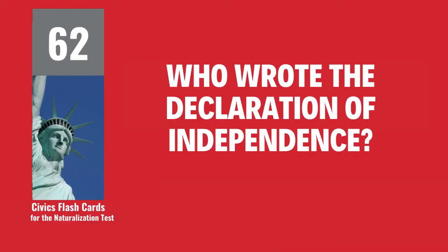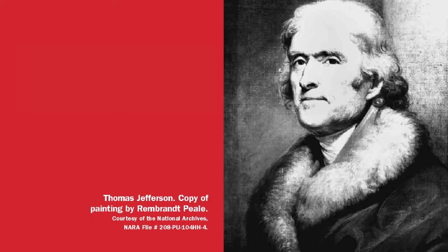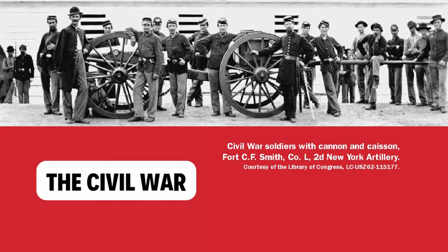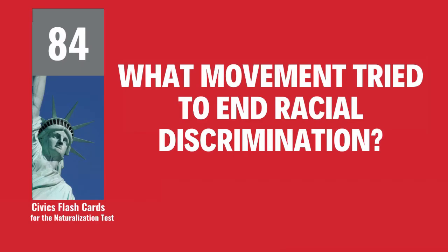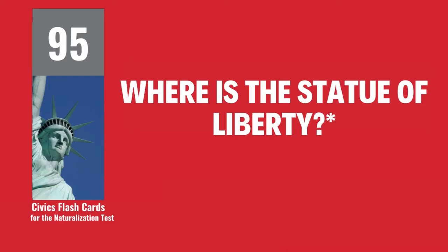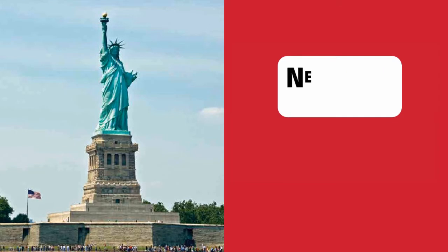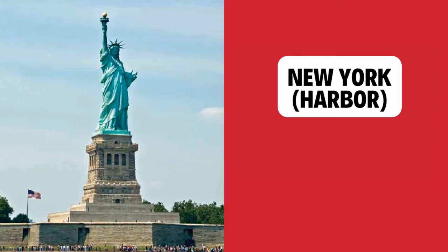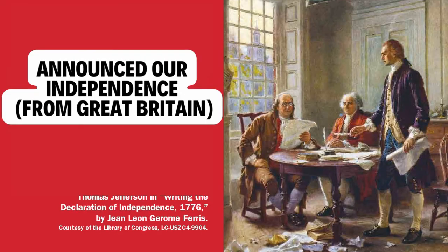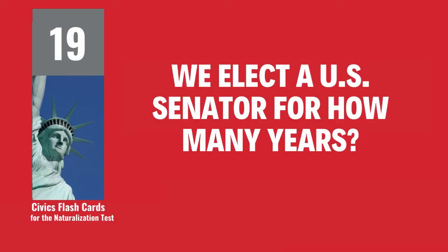Who wrote the Declaration of Independence? Thomas Jefferson. Name the U.S. war between the North and the South. The Civil War. What movement tried to end racial discrimination? Civil rights movement. Where is the Statue of Liberty? New York Harbor. What did the Declaration of Independence do? Announced our independence from Great Britain. We elect a U.S. senator for how many years? 6.